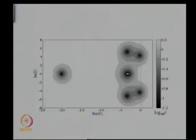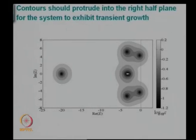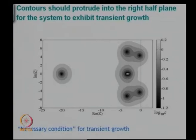The crux is: if the pseudo-eigenvalue crosses to the right half-plane, then there is a possibility of transient growth. The contour should protrude to the right half-plane for the system to exhibit transient growth — this is a necessary condition for transient growth. You can use the concept of pseudo-spectra to get bounds on transient growth.